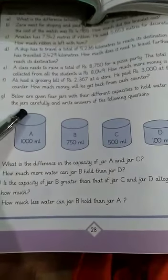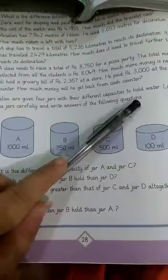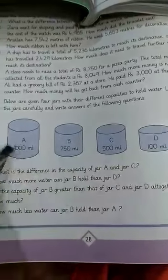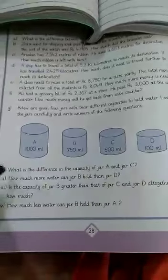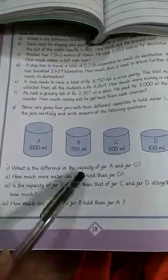Number G, students, you are given 4 containers. Below are given 4 jars with different capacities to hold water. Jar A: 1000 ml capacity, Jar B: 750 ml capacity, Jar C: 500 ml, and Jar D: 100 ml.